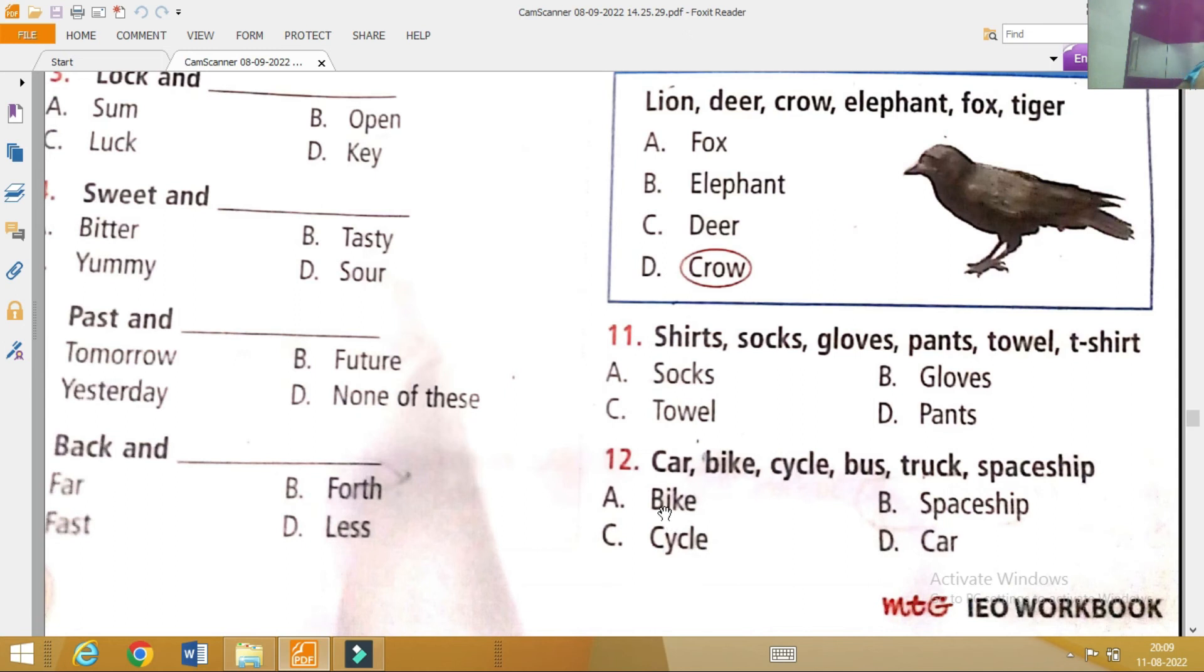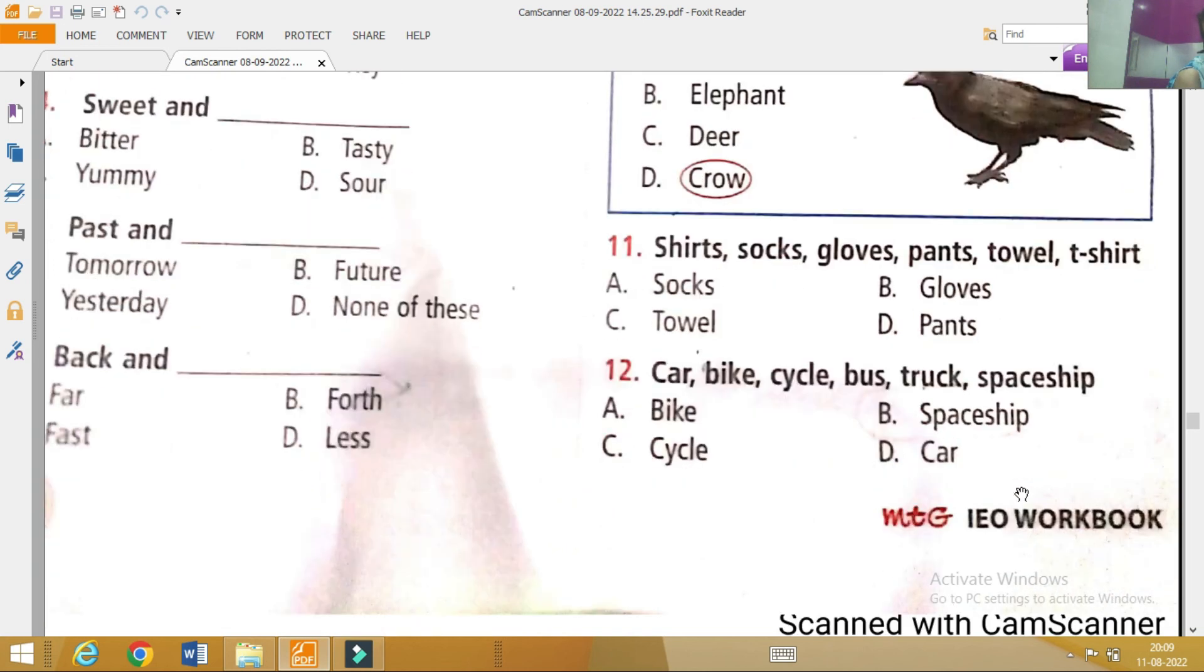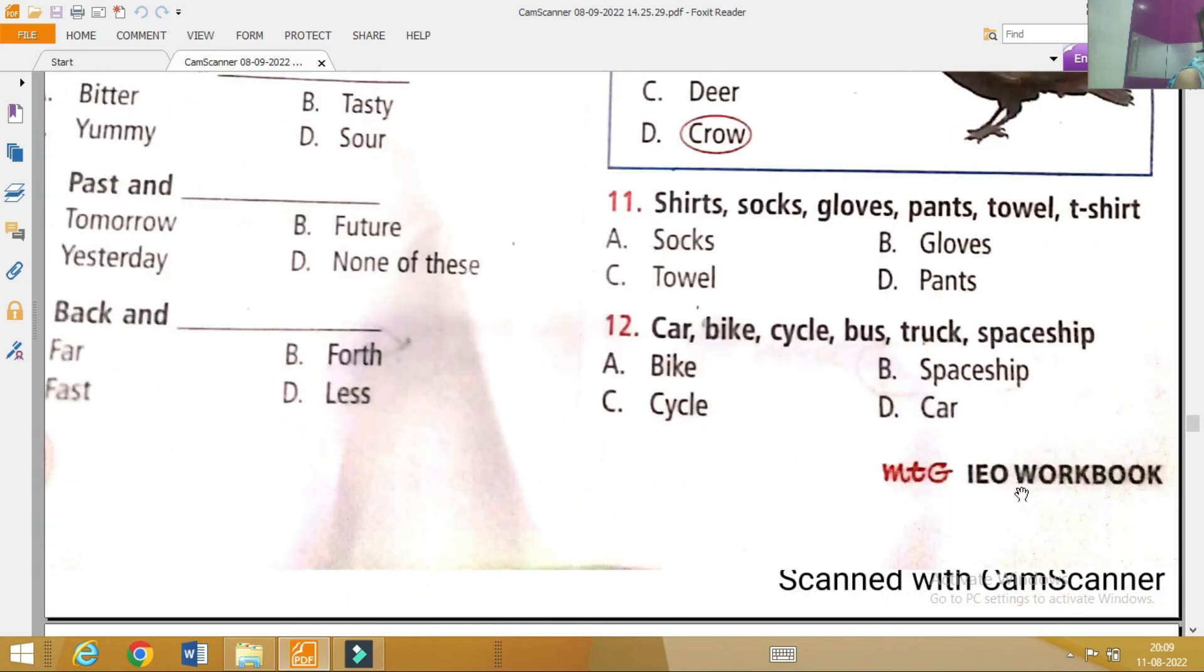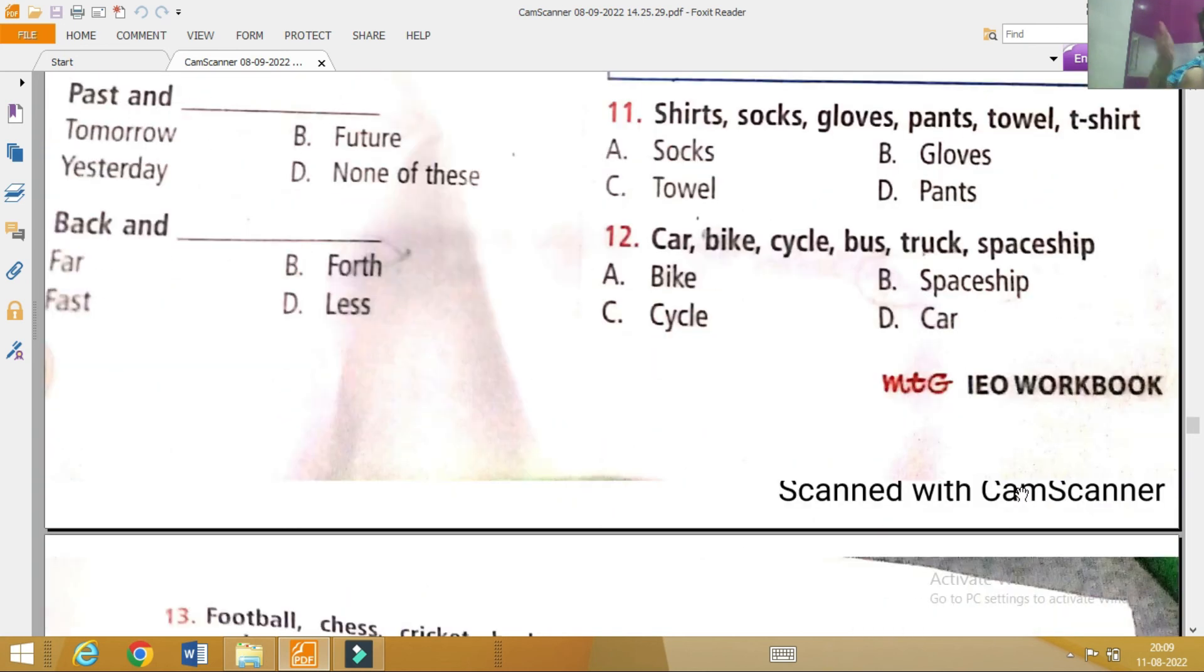Spaceship. Spaceship. Cart, bike, cycle, bus, truck. Spaceship is open. It is spaceship odd one out. Because it can fly. Cart, bike, and cycle cannot fly.